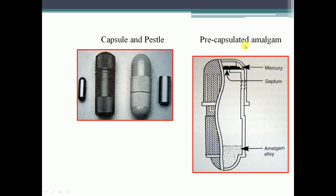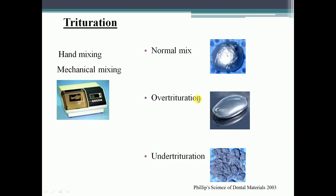The capsule contains a septum separating the mercury from the amalgam alloy. Mulling: after trituration, the mix is enveloped in a dry piece of rubber dam and vigorously rubbed, or triturated in a pestle-free capsule. Condensation: the material is condensed into the cavity with a condenser. Carving creates the perfect anatomy of the tooth. Over-trituration and under-trituration both decrease the strength of the material.